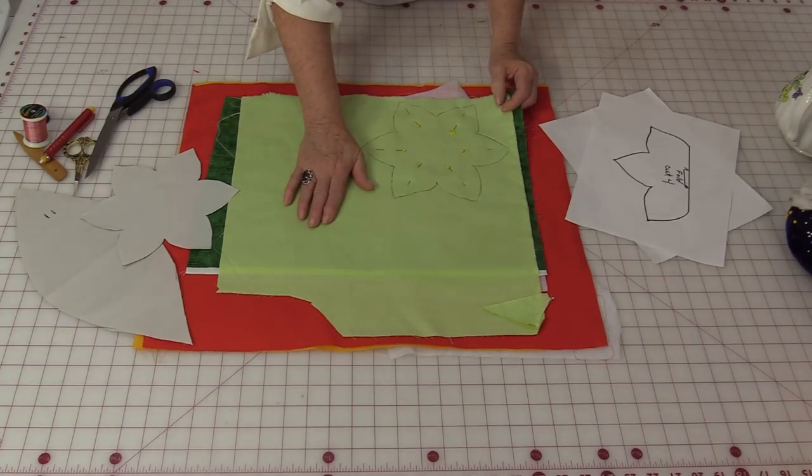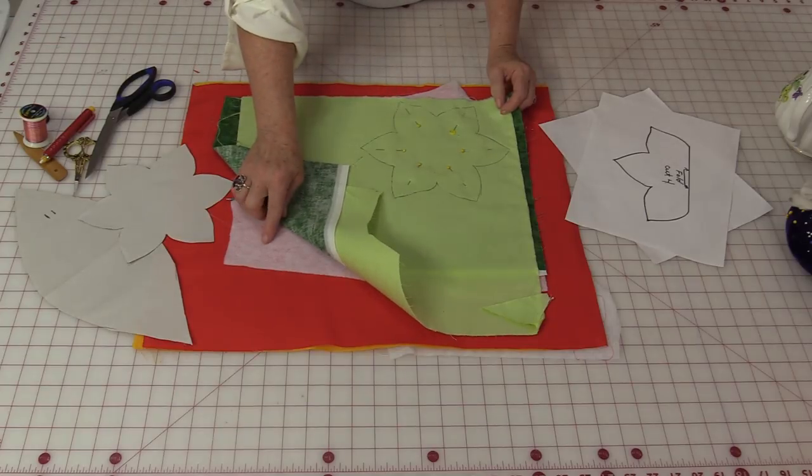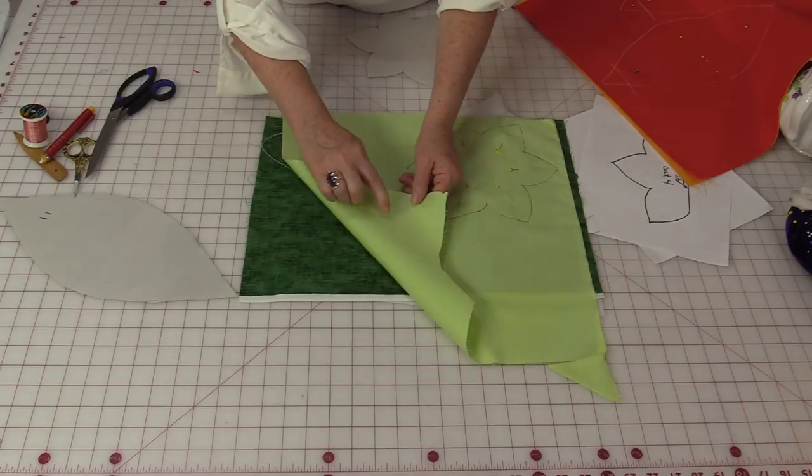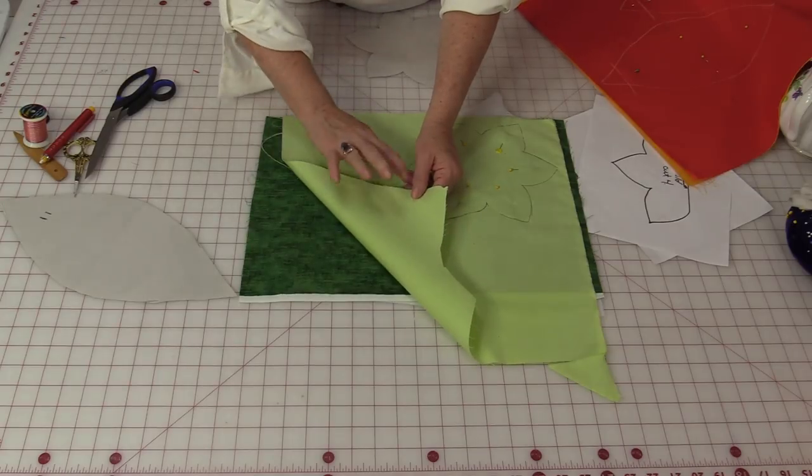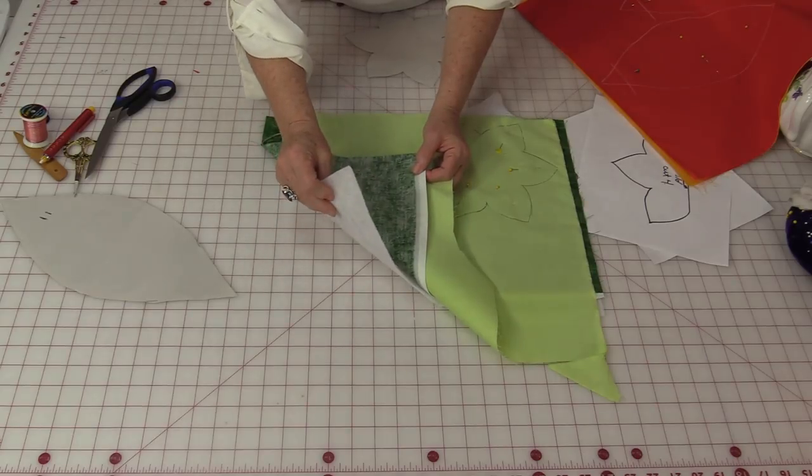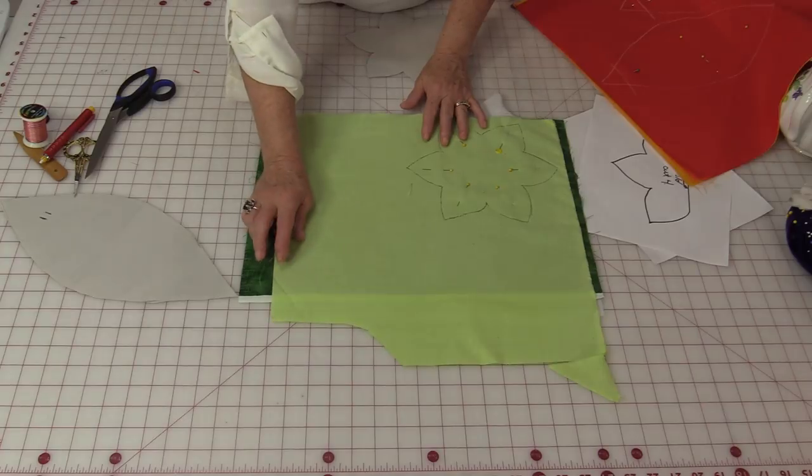We're going to cut all the pieces out of two pieces of fabric plus some batting. Take the right sides of the fabric and place them together. I have just two scraps of green and the batting is going to go on the bottom, so I'm going to layer those pieces together.